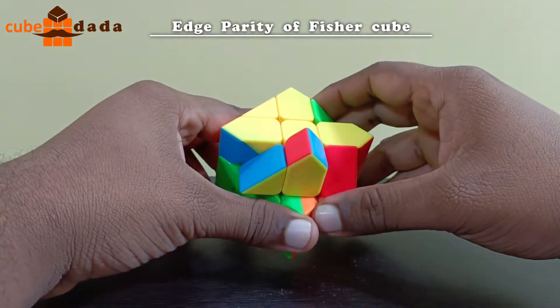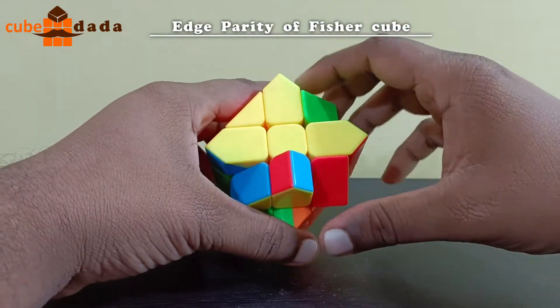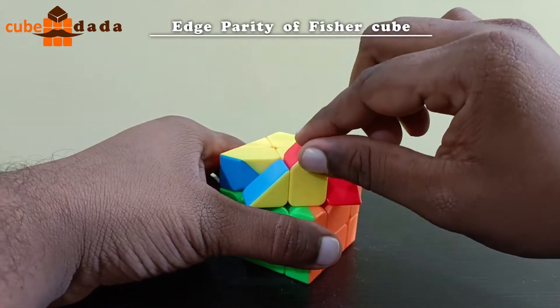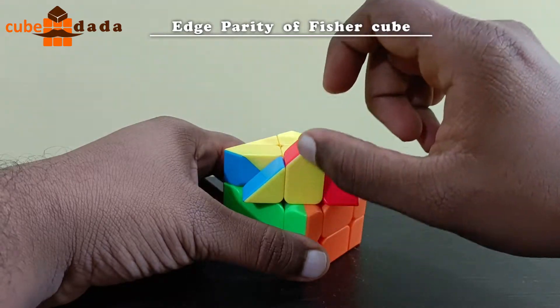Hello, so here you can see I am solving this Fisher cube and I got edge parity. Three edge cubes are placed correctly, but one edge cube is like this. It is flipped, it is like upward.